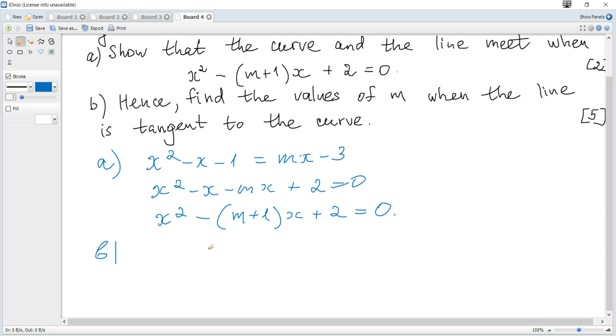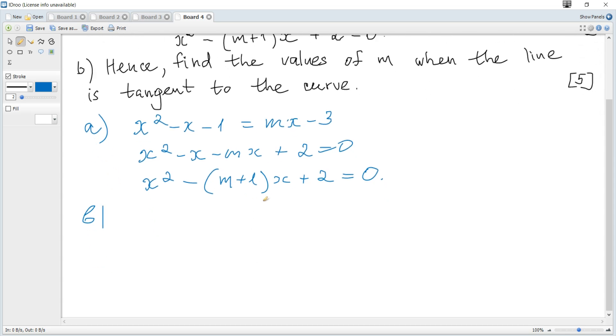So there must be only one point of intersection. Since this equation gives us points of intersection and we need only one point, there must be only one solution. Since it's quadratic, to get only one root, the discriminant should equal 0.